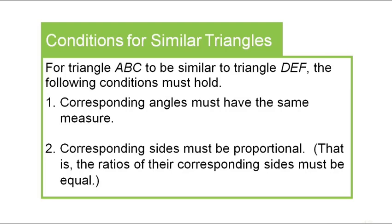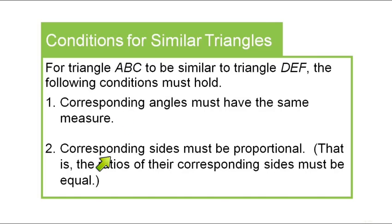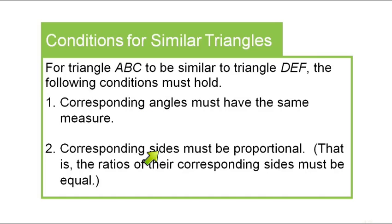Now let's talk about similar triangles. For triangle ABC to be similar to triangle DEF, corresponding angles must have the same measure and corresponding sides must be proportional. So if two triangles have the same angles, the triangles are similar and the sides must be proportional.